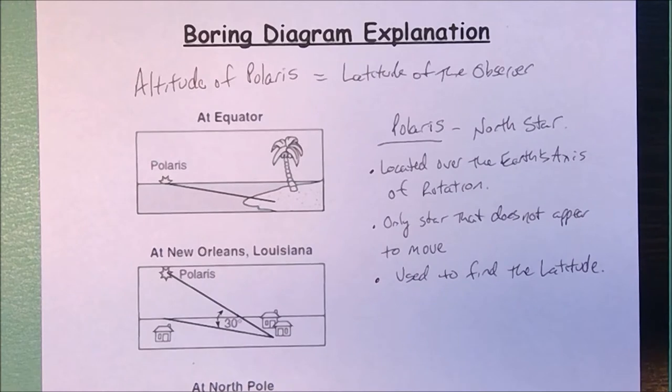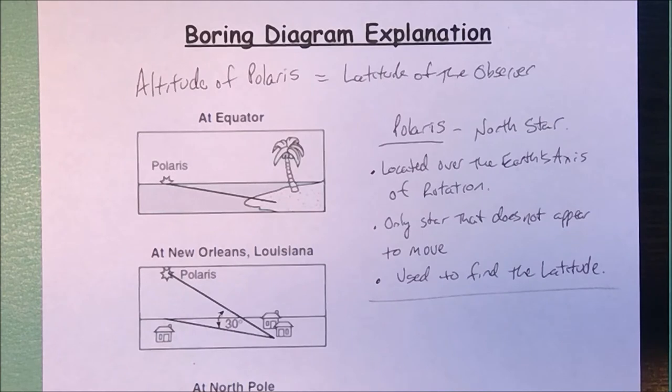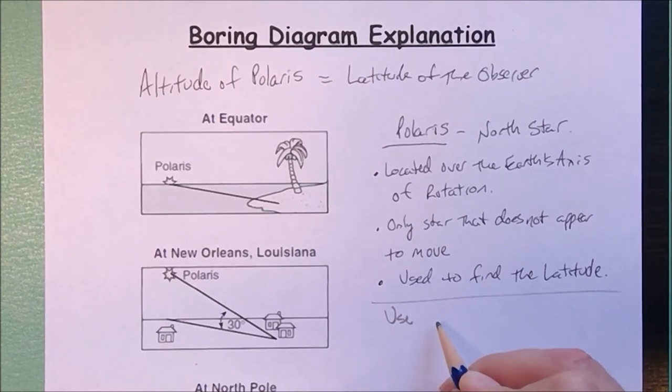So the question is how do you find the North Star and then how do you measure the altitude of the North Star in order to figure out what the latitude of the observer is. We're going to use a different constellation to find the North Star, and the constellation we're going to use is the Big Dipper.